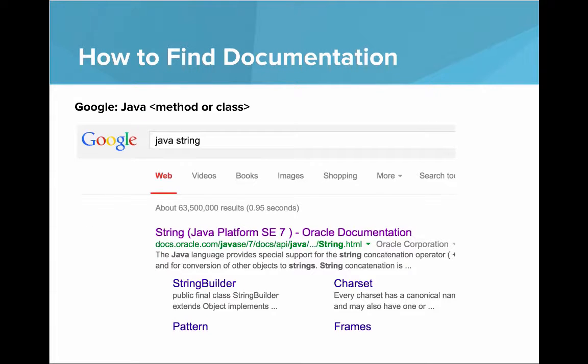So how do you find documentation? Well, you go to Google and then you type Java, and then the name or the method or class. So I type Java string. And then that first link is the one that we want.